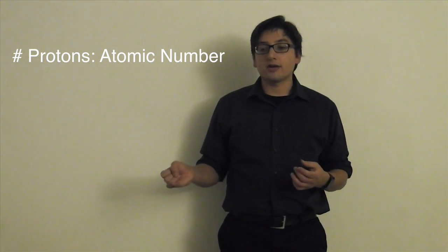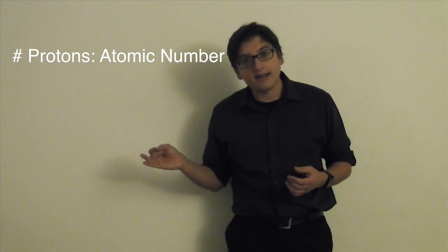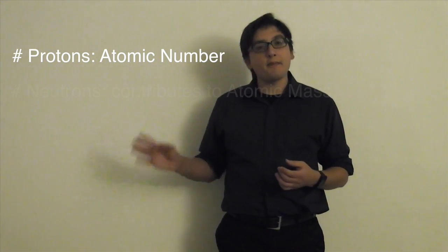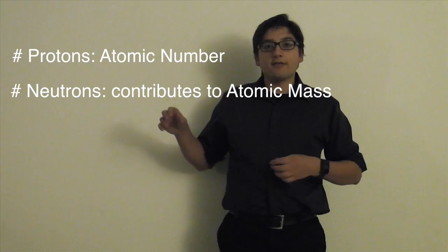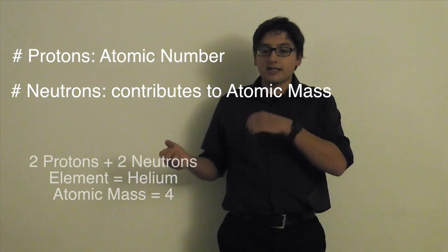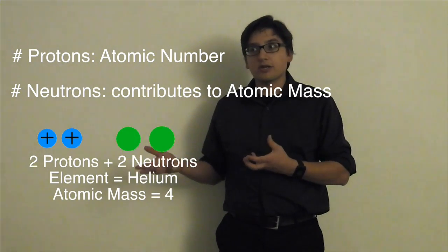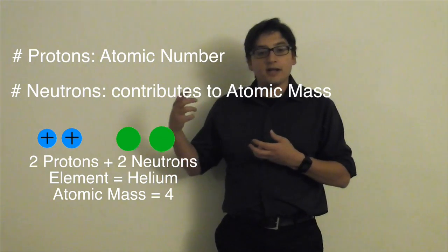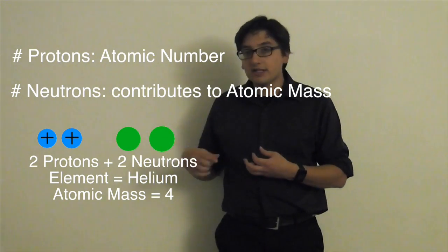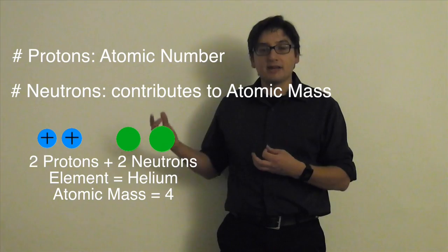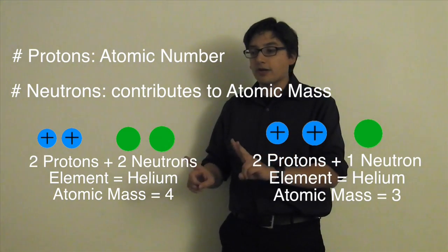The atomic number is how many protons there are and that's also gives you the identity of the atom. Neutrons add mass and so you can have something with two protons and two neutrons and that's two protons, so therefore it's helium. But if it has two neutrons, the whole thing weighs four atomic mass units, AMUs,